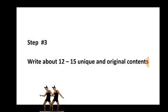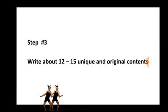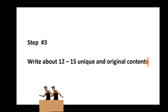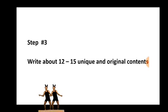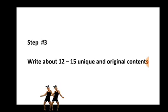Step three: write about 12 to 15 unique and original contents. All you need to do is write 12 to 15 original and unique articles — it is very simple to do. After writing your content, to make sure it is original, you can use a free tool called Duplicate Checker to check for plagiarism. I will leave the link in the description of this video.